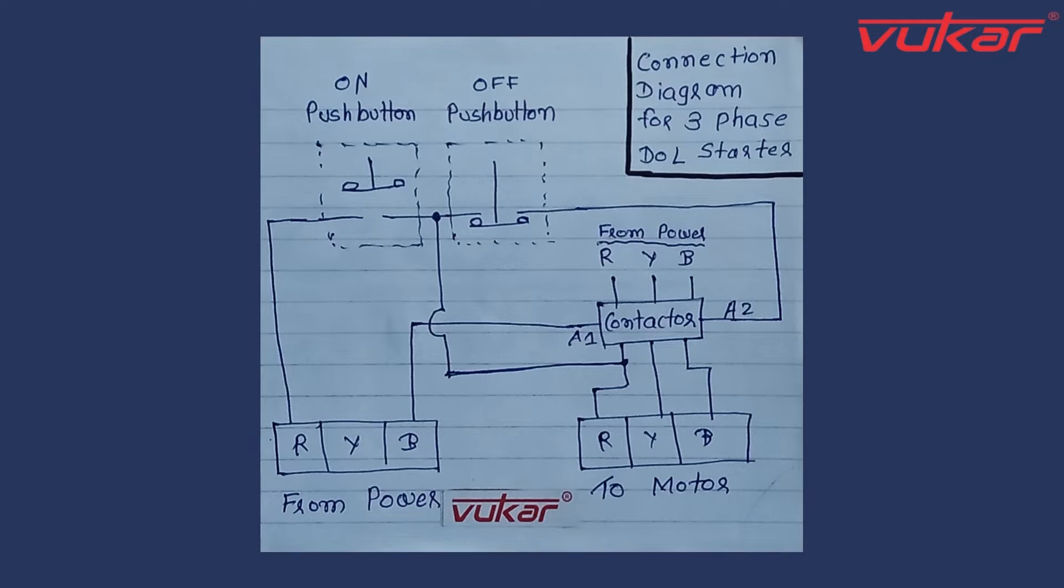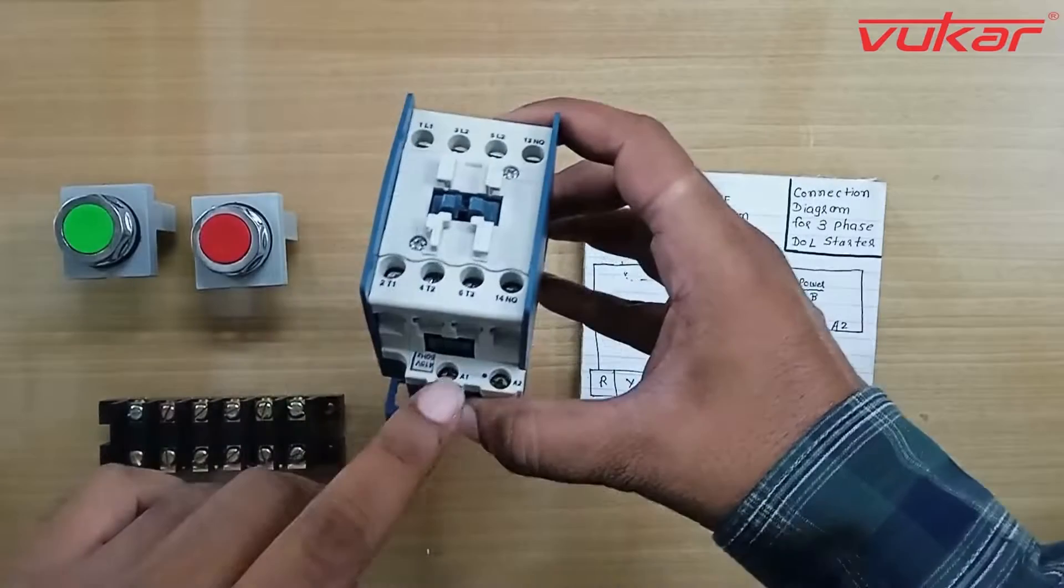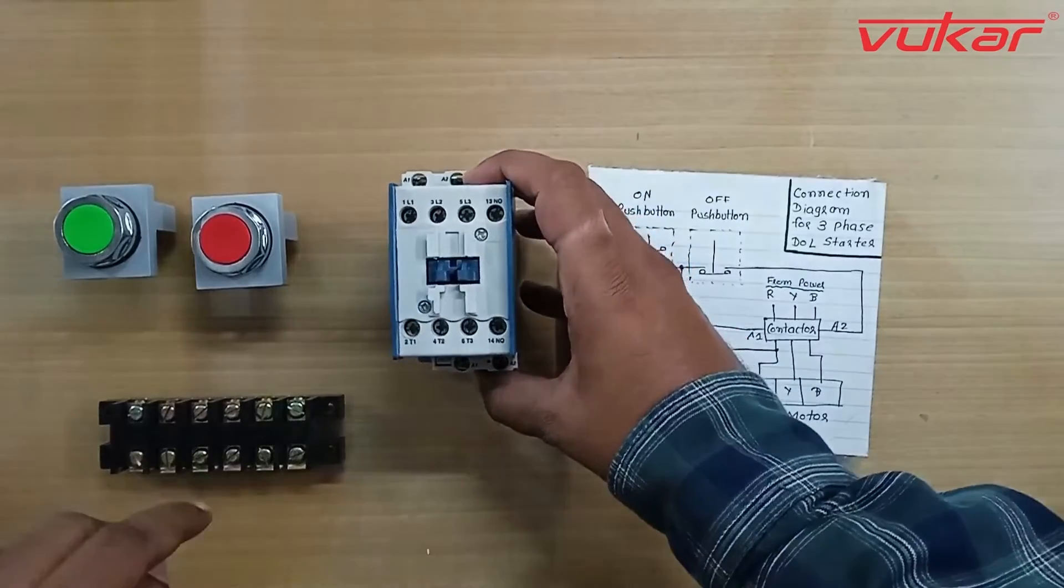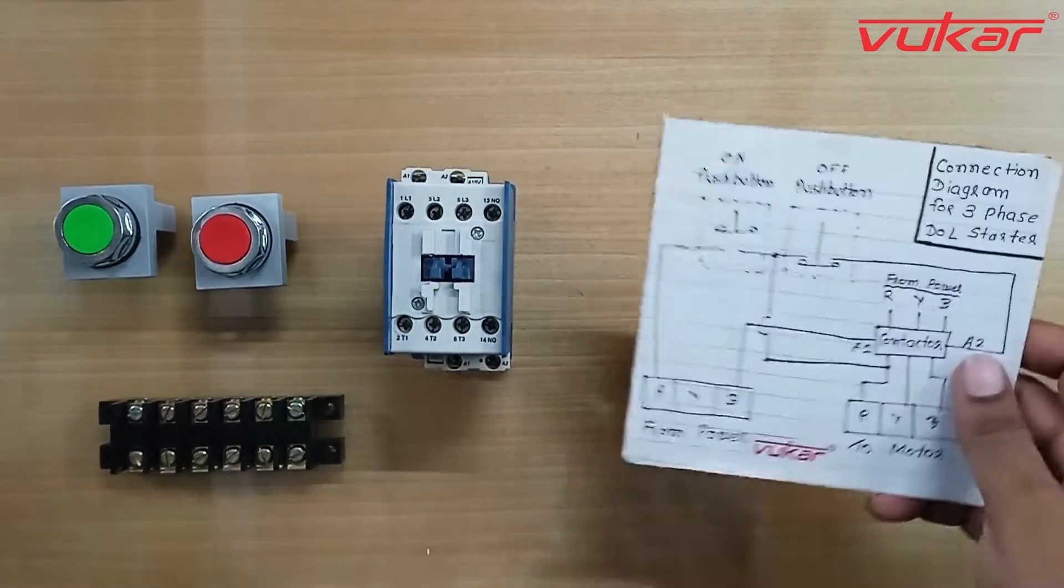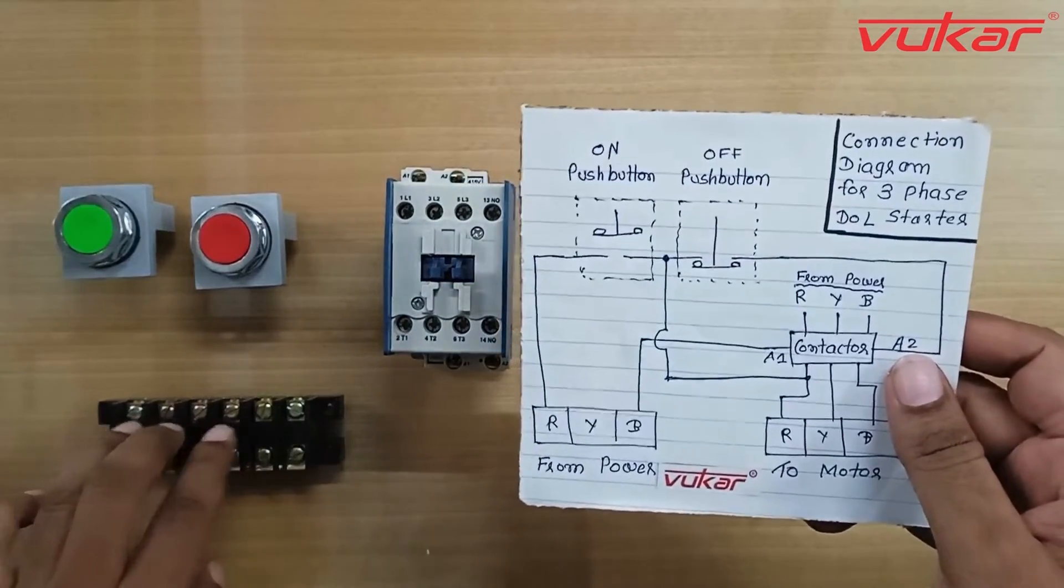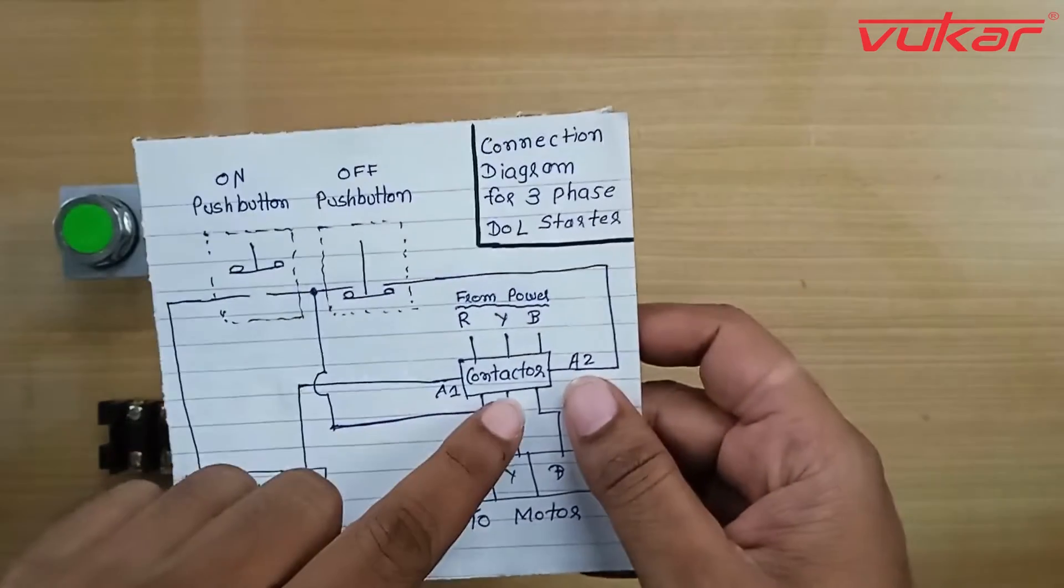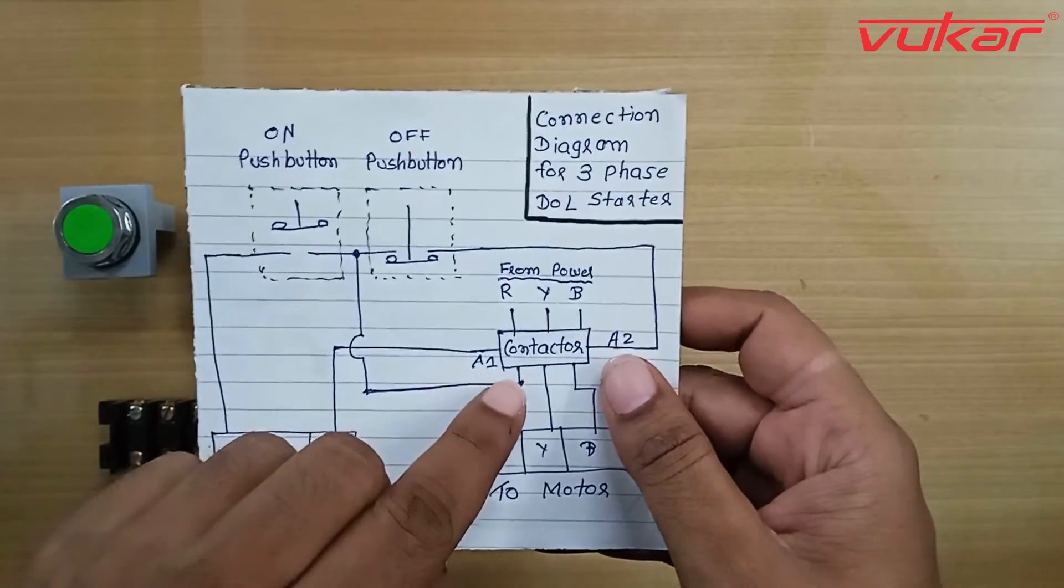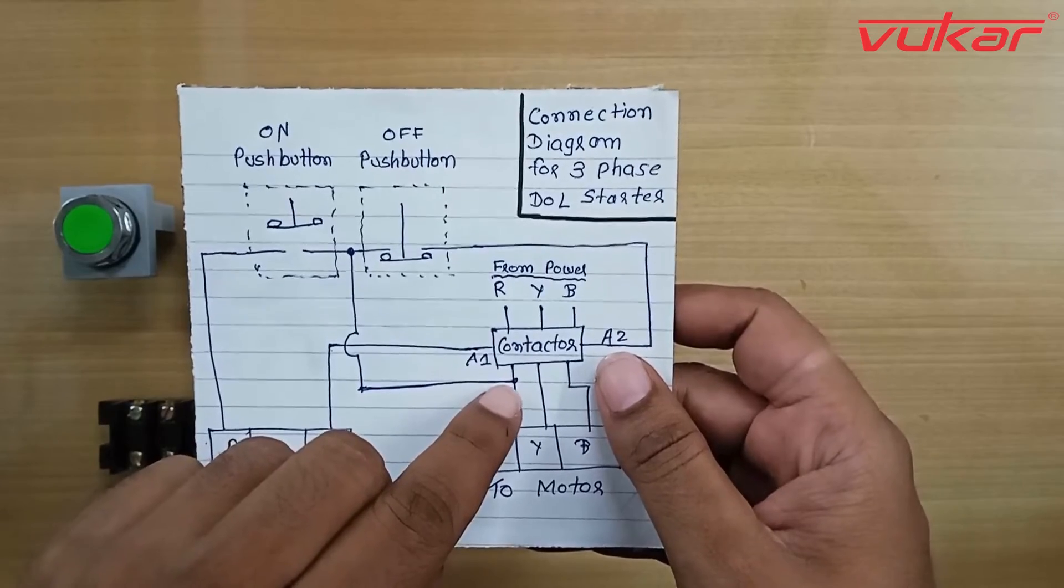With this wiring, when we press the on-push button, contactor will turn on but it will not hold. To hold the contactor, you can see that from the diagram, the output of phase R is connected with the on-push button as shown in the diagram.